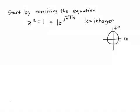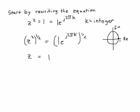Maybe it seems like we've complicated our equation by adding the e to the j two pi k term, but we'll see that it helps us automatically get those two solutions we're looking for. To proceed, we raise each side to the one-half power: z squared to the one-half gives us z, and on the right-hand side we get one to the one-half times e to the j two pi k over two. One to the one-half is just one, and two pi k over two gives us e to the j pi k, where k is an integer.